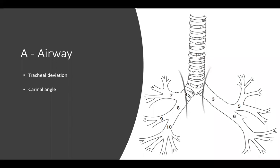Remember the ABCDE of chest x-ray where A stands for airway, as covered in the previous lecture. For airway, we look at tracheal placement to check for tracheal deviation and we look at the carinal angle.